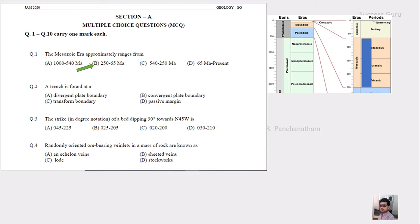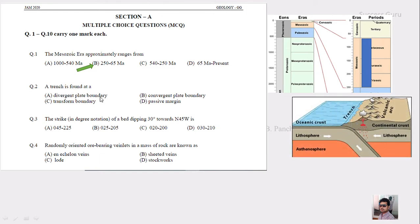The second question asks where a trench structure forms. In tectonics you've read about divergent boundary where two plates move away from each other, and convergent boundary where two plates move towards each other.